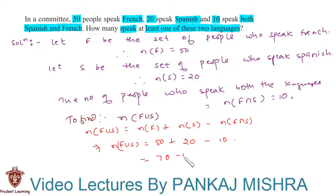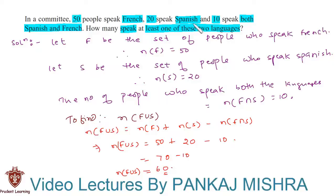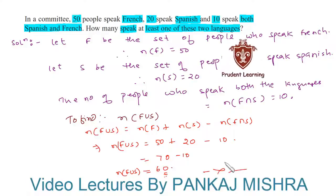This is equal to 70 minus 10, which gives us 60. Hence we can say that the number of elements in F union S equals 60. Therefore, the number of people who speak at least one of these two languages is 60. This completes our solution.